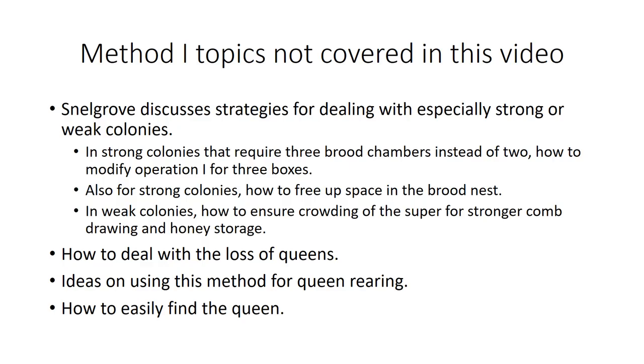Method one topics not covered in this video. Snellgrove discusses strategies for dealing with especially strong or weak colonies. In strong colonies that require three brood chambers instead of two, how to modify operation one for three boxes. Also for strong colonies, how to free up space in the brood nest. In weak colonies, how to ensure crowding of the super for stronger comb drawing and honey storage. How to deal with the loss of queens. Ideas on using this method for queen rearing. How to easily find the queen.